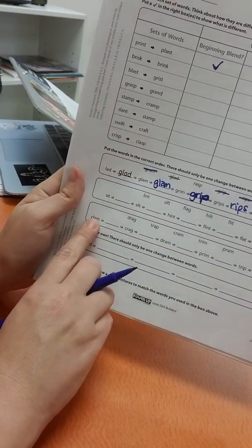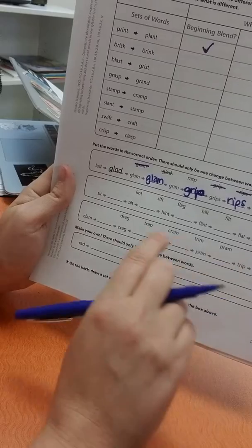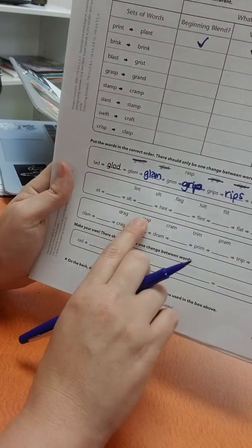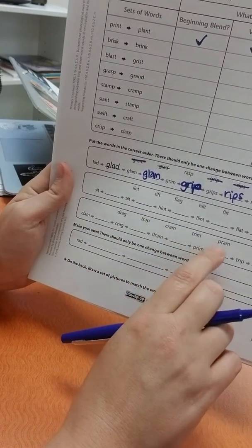Here you're going to change clam, crag, dram, prim, and trip. The words you have are drag, trap, cram, trim, pram.